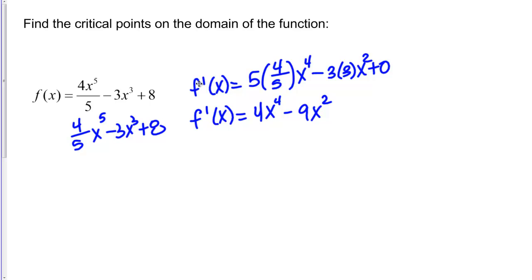Now that I have my derivative, I want to think about points where it equals 0 or where it does not exist. Let's start by thinking if there are any places where this derivative does not exist. In this case, my derivative is just a polynomial, 4x⁴ minus 9x², which is defined for all x's. There are no x values for which the derivative does not exist, so I don't have any critical points from that case.